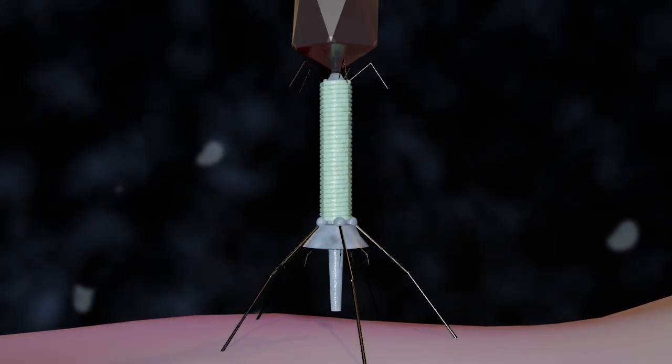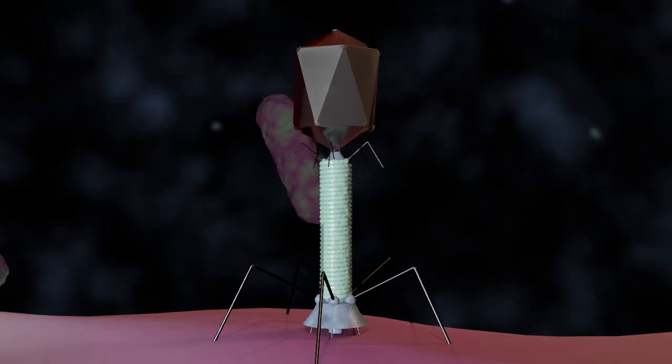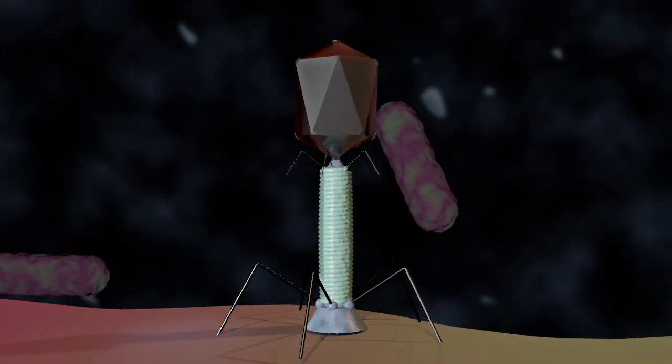The base plate changes conformation and the tail sheath contracts causing GP5 at the end of the tail tube to puncture the outer membrane of the cell.